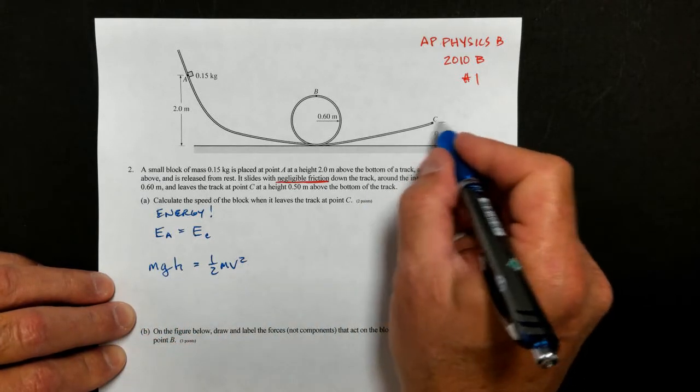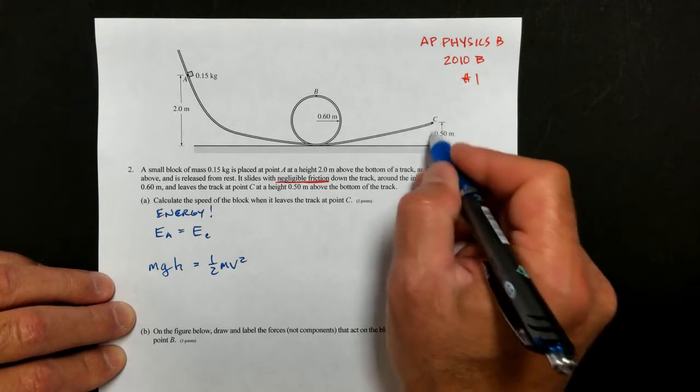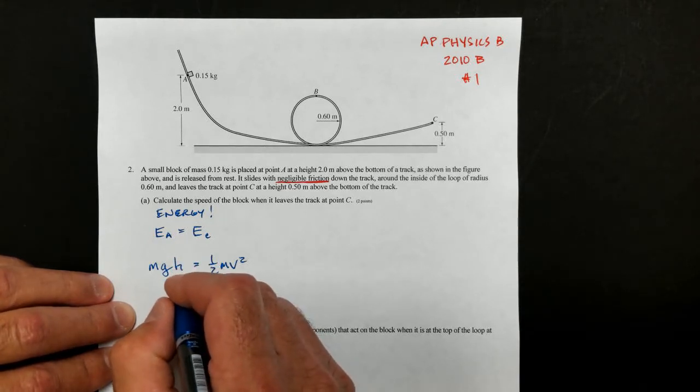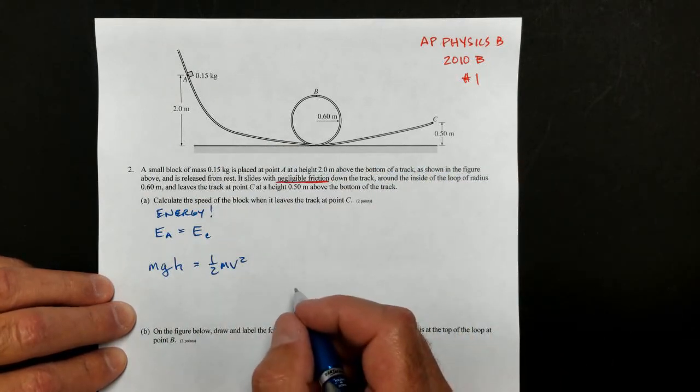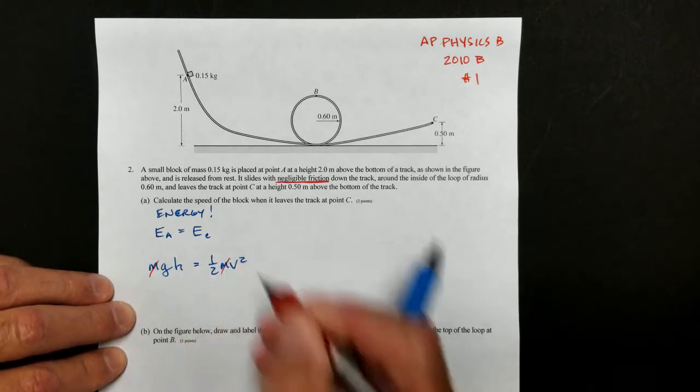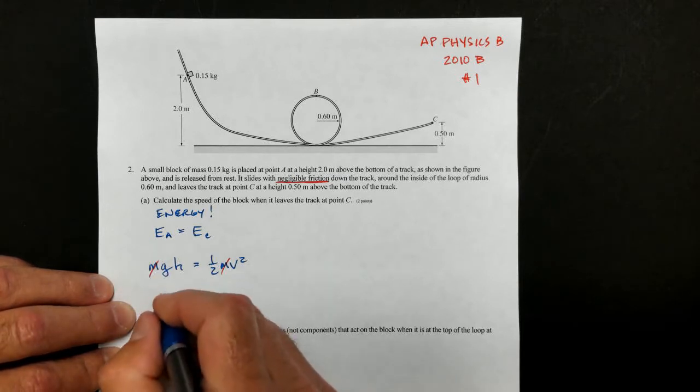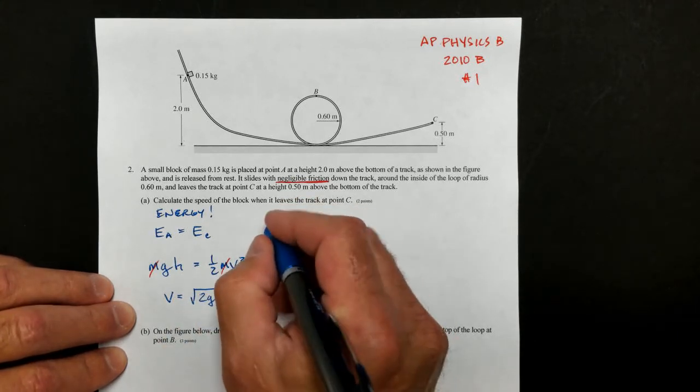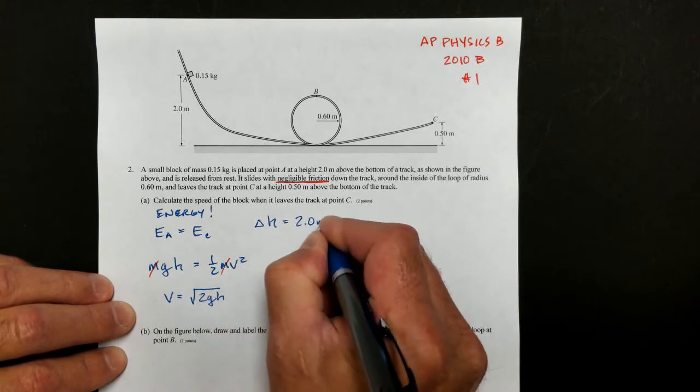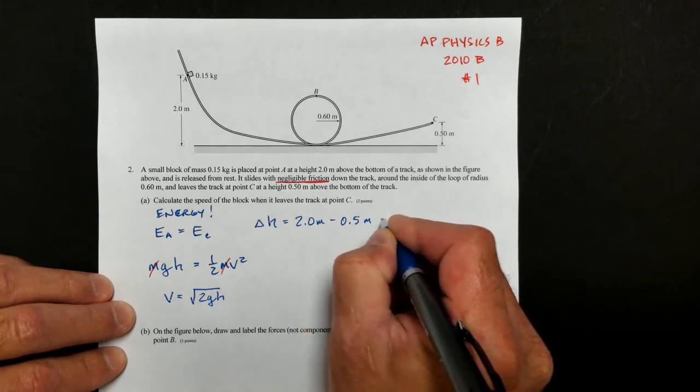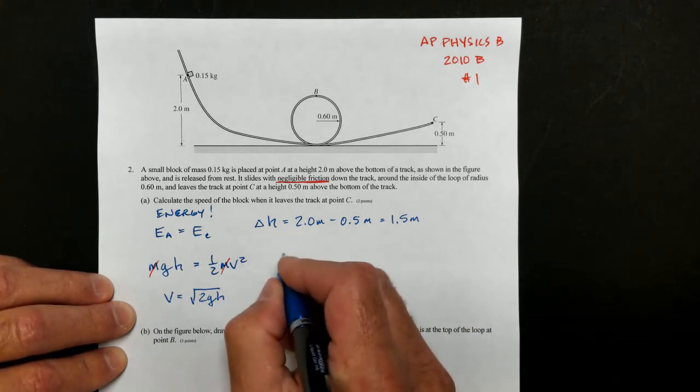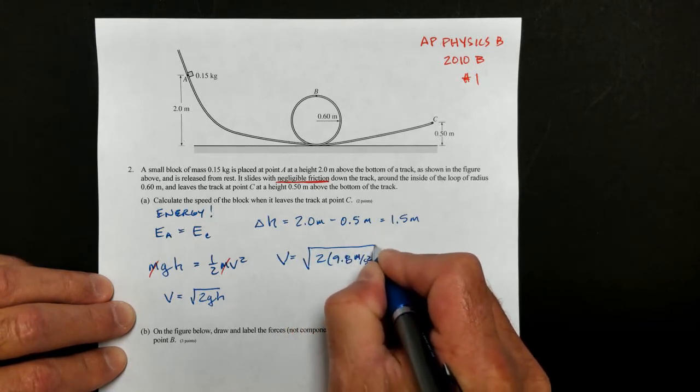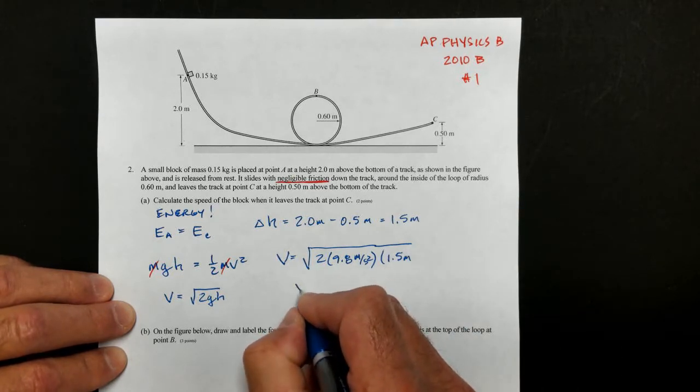Now, I'm going to call point C's height zero, because then I can eliminate this height altogether and any potential energy that we might have at the end. And so my height here is going to be the 2.0 minus the 0.5 or 1.5 meters. When I do a little canceling, everybody brought mass to the party, we see that the familiar expression that comes out is V equals root 2gh. At this point, we're ready to plug and chug. Don't forget that the height change, the delta H, is equal to 2.0 meters minus 0.5 meters, so that equals 1.5 meters is the change in height.